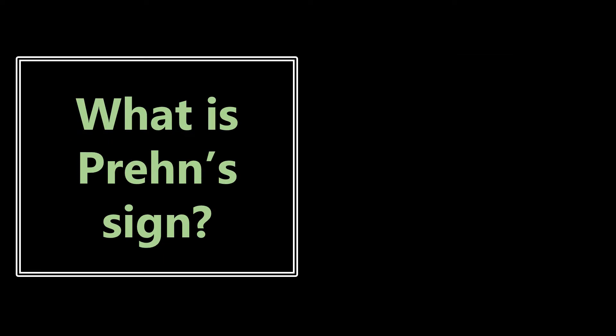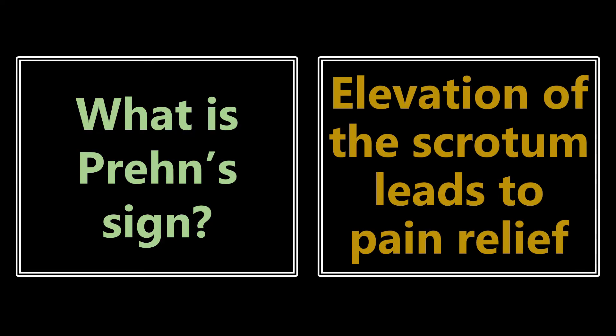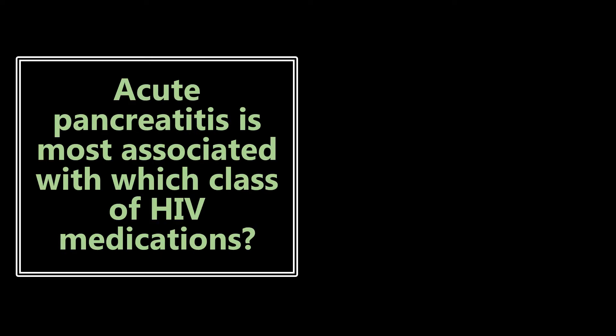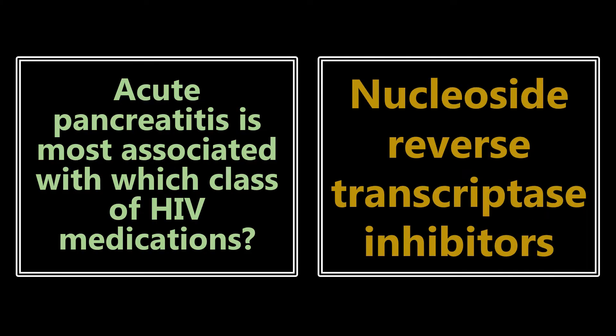What is Prens sign? It's elevation of the scrotum leading to pain relief, and it is associated with epididymitis. Acute pancreatitis is most associated with which class of HIV medications? That would be nucleoside reverse transcriptase inhibitors — NRTIs — which place HIV patients at increased risk of acute pancreatitis.